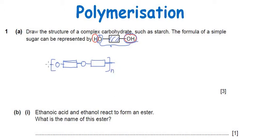Such a simple polymer diagram will give us three marks, which includes the correct linkage, the correct general group, the extended bonds, and the N shown outside the bracket.